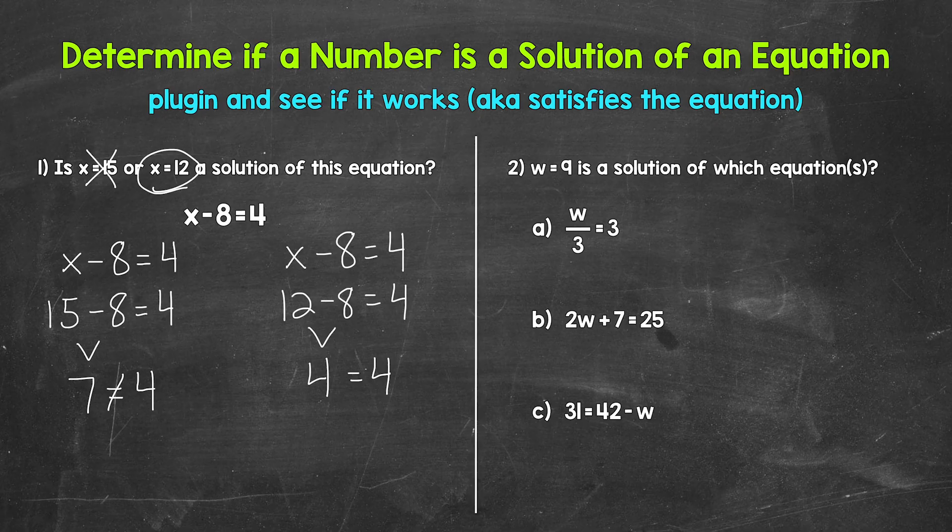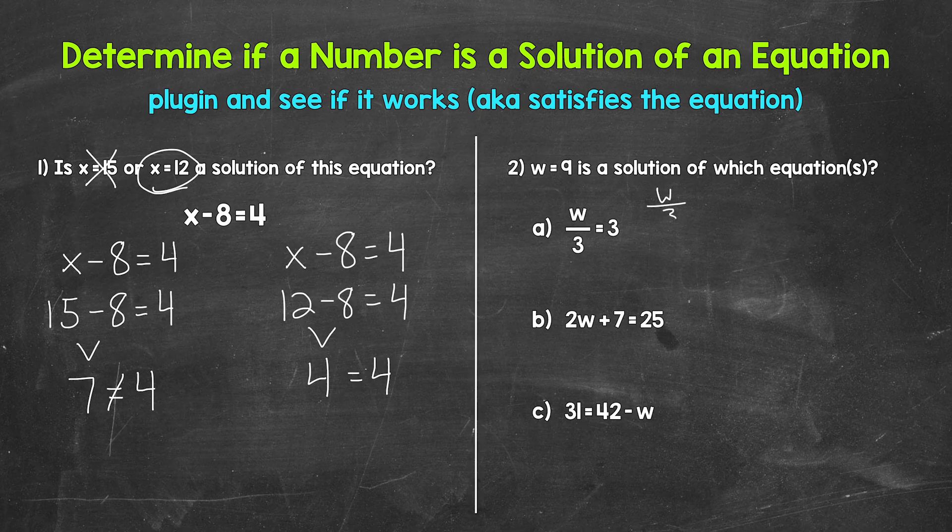So we have w divided by three equals three. Let's plug in nine for w. So we have nine divided by three equals three. Nine divided by three is three. So nine is a solution of that equation. Nine makes that equation true.